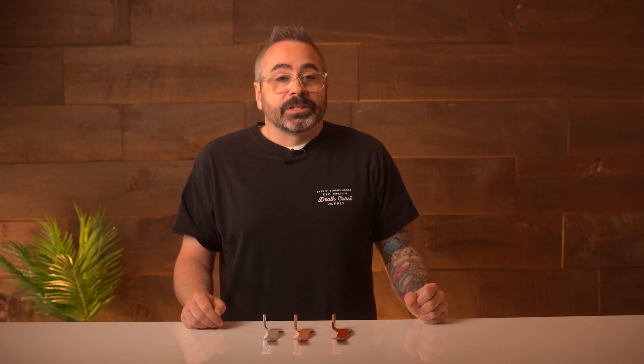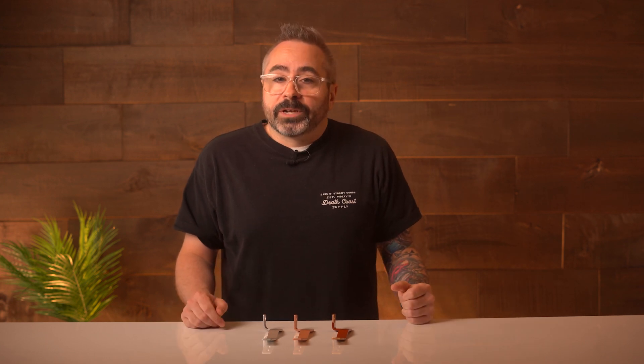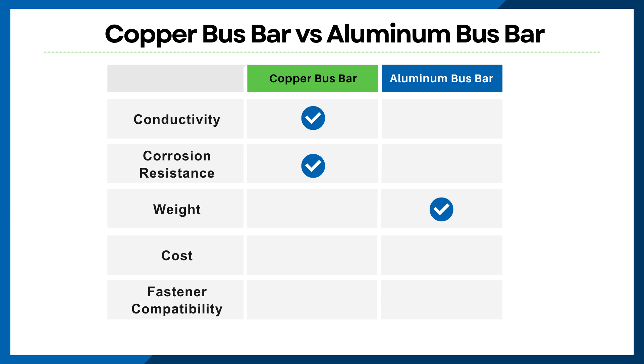Aluminum does have its own advantages. Aluminum is popular when applications require lower weight, and its lighter weight facilitates easier handling, particularly in larger installations. Another area where aluminum beats copper is when you're on a budget — aluminum is usually cheaper than copper, making it a more cost-effective choice.